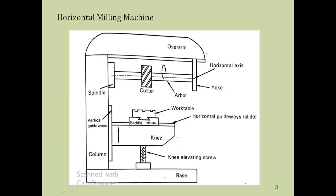The next part is the knee. The knee is a casting that slides upwards and downwards on the vertical guideways along the column. The knee can slide upwards or downwards, and this raising or lowering of the knee through the guideways depends upon the knee elevating screw. The knee in turn gives support to the saddle.